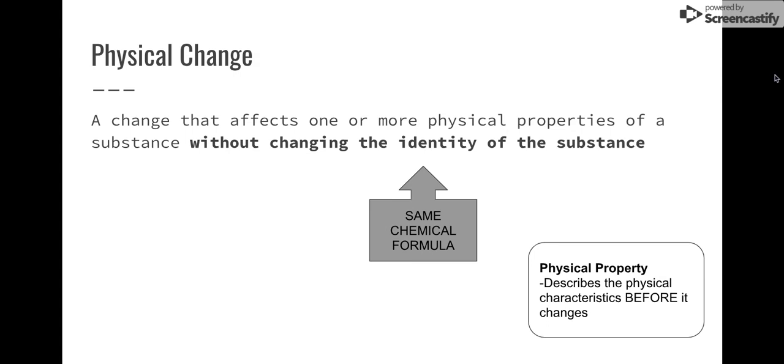Let's contrast that with physical change. A physical change is a change that affects one or more of the physical properties of a substance, and I'll give you some examples of each of these, but we do not change the identity, the chemical formula of the substance itself. Let's contrast that to physical property. The physical property is similar. You're basically just describing the physical characteristics of a substance before it goes through a physical change.